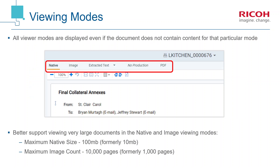When reviewing a document, all viewer modes are now displayed at the top of the screen. If a document lacks content for a particular mode, it will be noted — for example, the no production note displayed on the unproduced document shown. Server 2022 also offers better support for viewing larger files, with a tenfold increase in capacity for both native files and images.